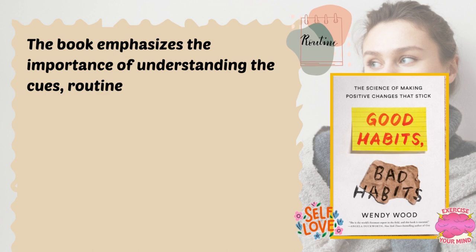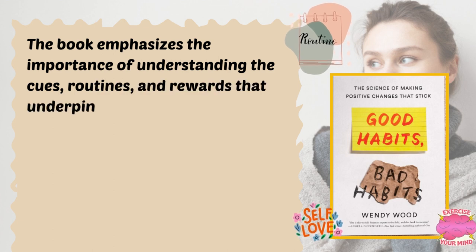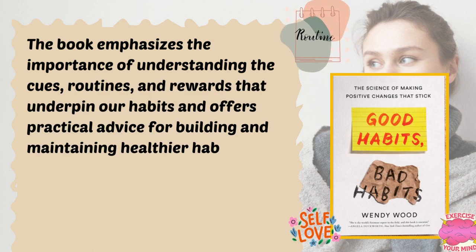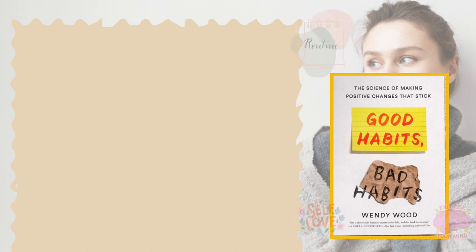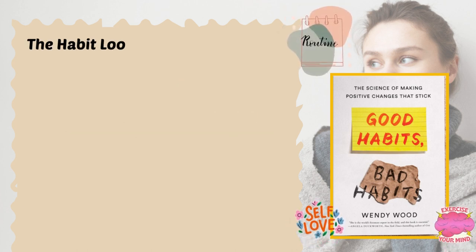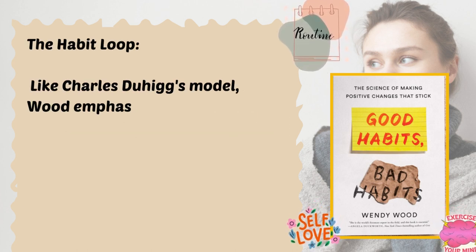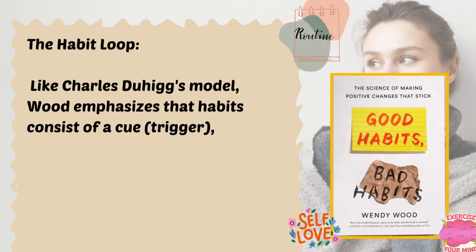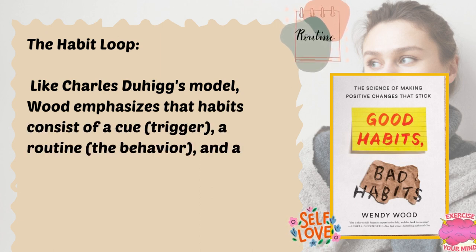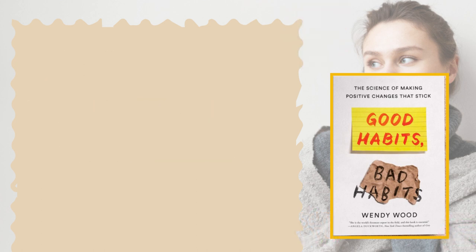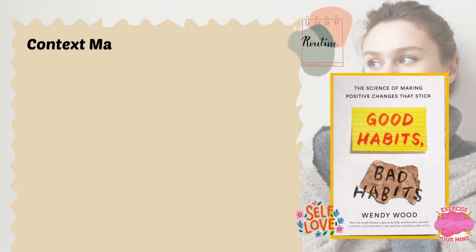The book emphasizes the importance of understanding the cues, routines, and rewards that underpin our habits, and offers practical advice for building and maintaining healthier habits. Key takeaway: the habit loop. Like Charles Duhigg's model, Wood emphasizes that habits consist of a cue, a routine, and a reward.